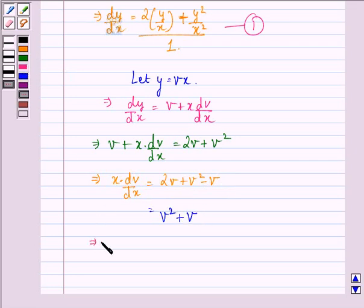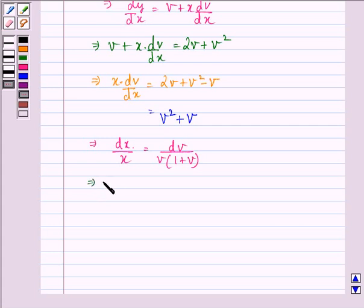So this implies dx/x = dv/(v(1+v)). This can be written as dx/x = (1/v - 1/(1+v))dv.